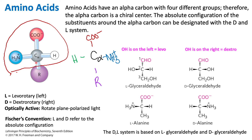We are getting mirror images because there is chirality exhibited in this general structure of an amino acid around the alpha carbon. Because this alpha carbon has four different substituents, we exhibit chirality and we get mirror images. These mirror images are referred to as enantiomers — essentially, non-superimposable mirror images. Non-superimposable means that if I pick this molecule up and place it on top of the other, the molecules will not align directly with one another.